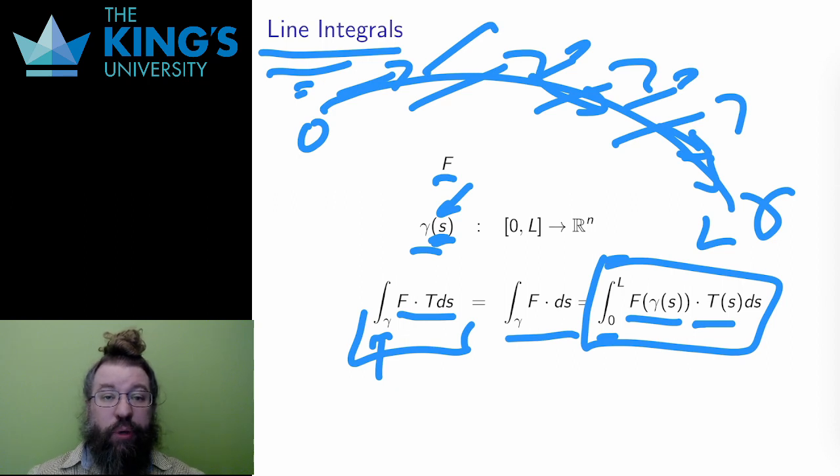If the integral is positive, then on average, the field is working along with the curve. If the integral is negative, then on average, the curve is moving against the field. The integral curves of the field are curves where the tangents of the curve and the field coincide, and these are the curves that have the largest possible line integrals.